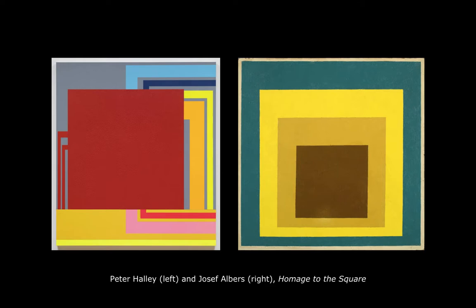For context, here's a slide that compares one of Halley's paintings on the left with an example of Joseph Albers's square painting on the right.